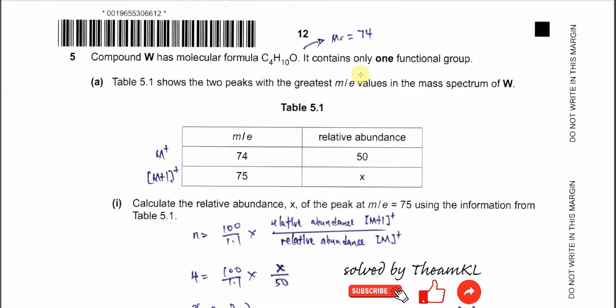Question 5. Compound W has molecular formula C4H10O. It contains only one functional group. Part A: Table 5.1 shows two peaks with the greatest m/e value in the mass spectrum of W. Because it's telling us greatest m/e value, the highest mass must be m+1 and the second highest is m, because their m/e differs by 1. So we are quite sure 75 is m+1 and 74 is m, the molecular ion. The relative abundance for m is 50, m+1 is x, which we need to find.